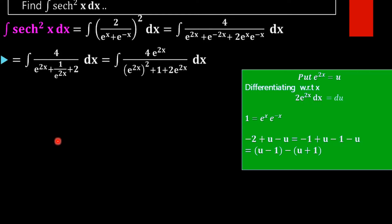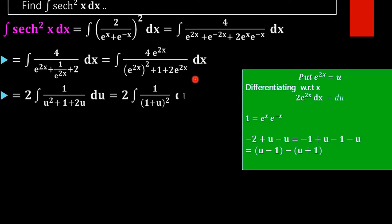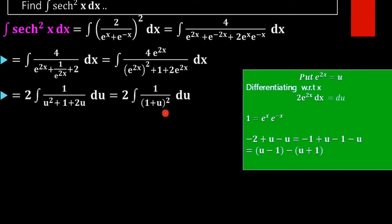On substituting these values, e^(2x) becomes u², and 2·e^(2x) dx becomes 2u... actually, taking 2 outside, 2·e^(2x) dx = du. So the function becomes 2·du / (u + 1)². This is now in an integrable form.